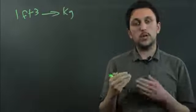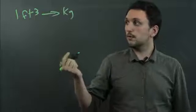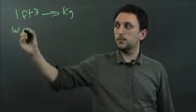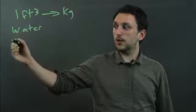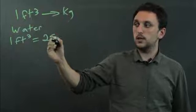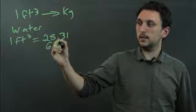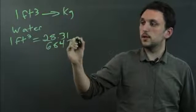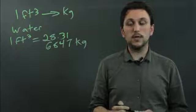The only way we can do that is if we know the mass of the substance we're converting. So for example, with water, where we know the density, we can say one cubic foot equals 28.316847 kilograms. But with different substances, that conversion will be different.